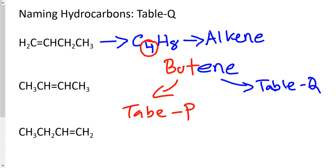We are going to use reference table Q and P to identify the name of a hydrocarbon. If you count the number of carbons from left to right, the double bond is in between the first and second carbon, and therefore the name is going to be 1-butene. The number one represents that the double bond is at the first carbon.